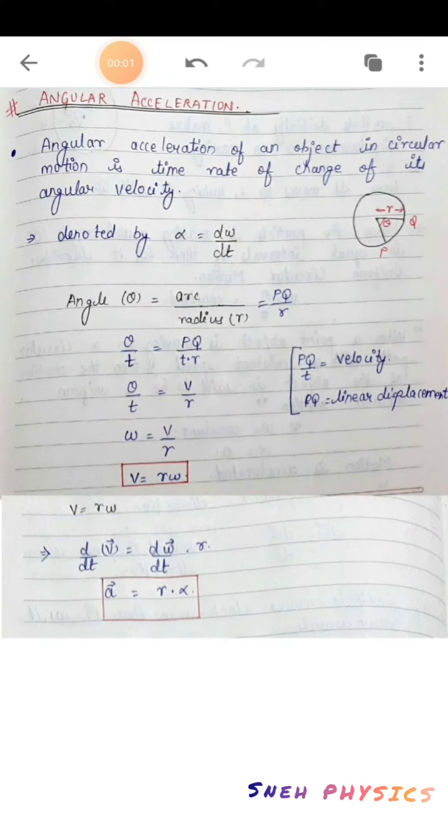Students, we are going to discuss angular acceleration in this lecture. Angular acceleration is denoted by the letter alpha, which is the rate of change of angular velocity. Angular velocity is denoted by omega, so alpha is omega by t. When the omega value is very small, we use d, so angular acceleration is d omega by dt.